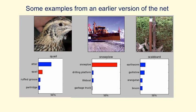If you look on the right, it gets it completely wrong. A guillotine — you can see why it says that. You can possibly see why it says orang-utang because of the jungle-looking background and something orange in the middle. But it fails to get the right answer.